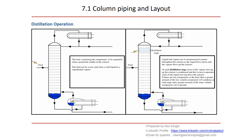That is our ultimate goal — to get these products from this feed. Now let us understand what is happening once this feed enters the column. Liquid and vapor are in counter-current contact throughout the column — vapors are going up, liquid is going down. The required components will be separated at each distillation stage. Some of the vapors moving up are condensed, and this in turn vaporizes some of the liquid. When vapors moving up and liquid moving down come in contact, some part of the vapors will convert into condensate and some condensate will convert into vapor.